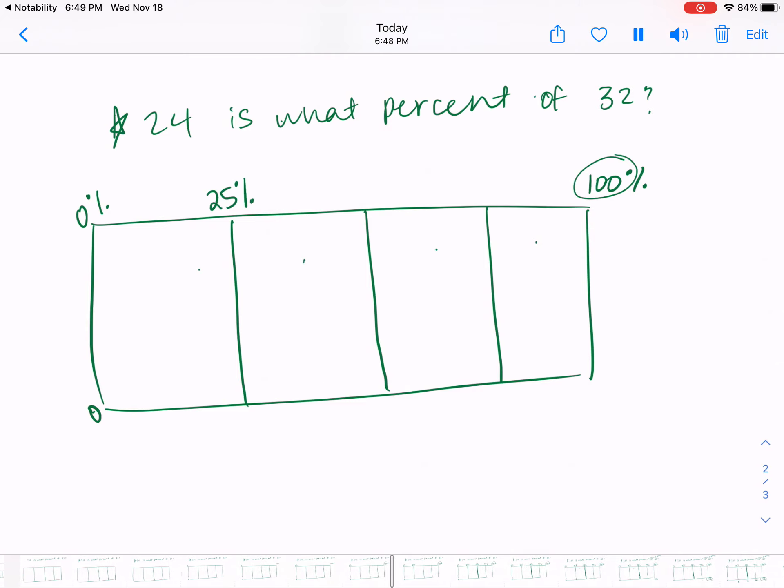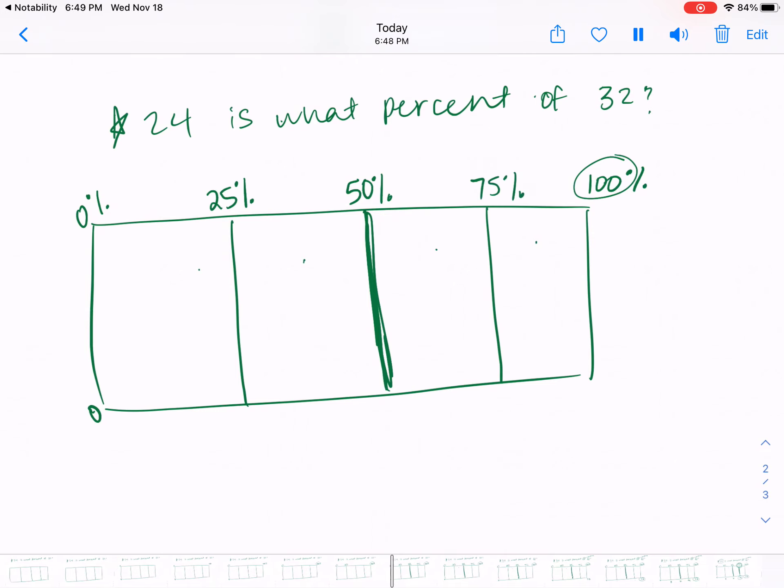So I'm actually going to count by 25. So if the first one was 25 this shows me 50 percent which makes sense because this is halfway across my bar and then this would have to be 75 percent. So now I've got my bar split up into 25, 50, 75, and 100 percent.